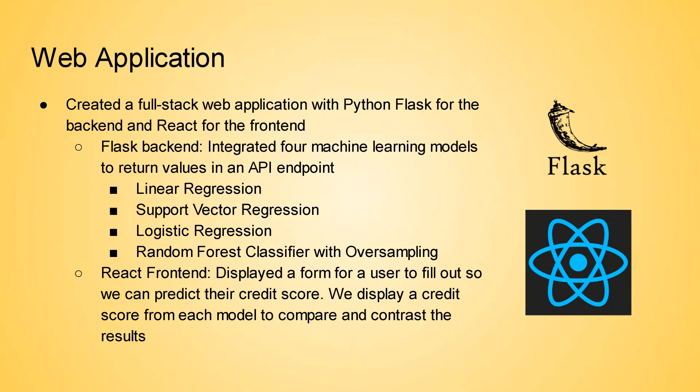We developed our web application using React and Python Flask, where React is used for the frontend and Flask is used for designing the backend of our web app. In our frontend, we displayed a form which lets users enter desired data to predict credit score. When the user clicks the button to calculate the credit score, the data gets sent to the backend in JSON format. On our backend, we use the pickle module to create a model for linear regression, support vector regression, logistic regression, and random forest classifier. We then display a credit score from each model to compare and contrast the results in the frontend.